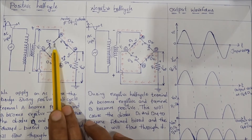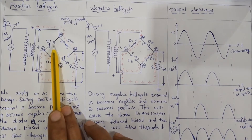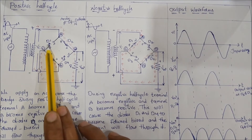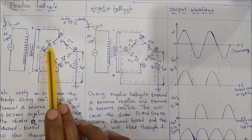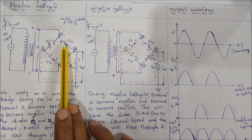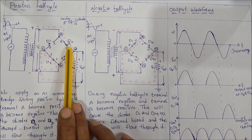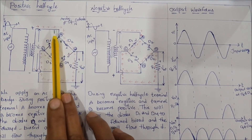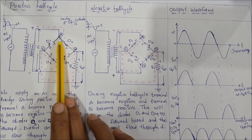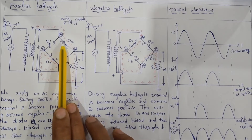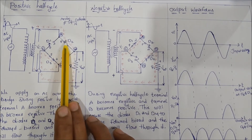D1 is reverse biased, which means it is in the off state, represented as an open switch. Now let's check D2. Check D2 - we must look at the P-type side. The P-type is connected to the anode.